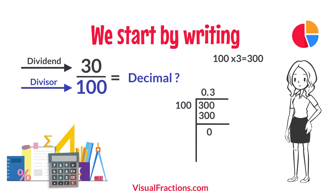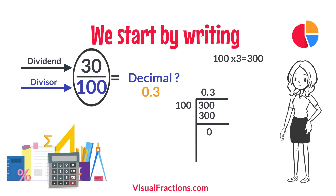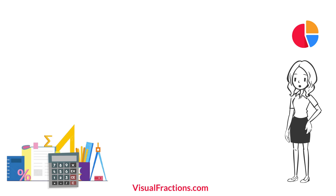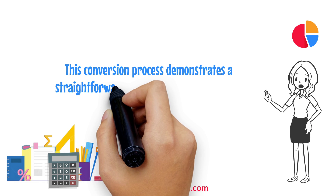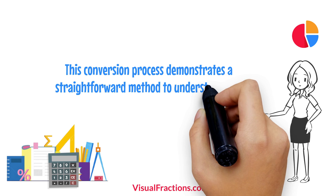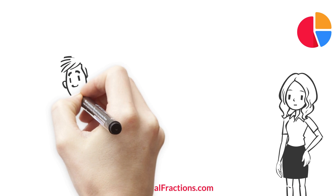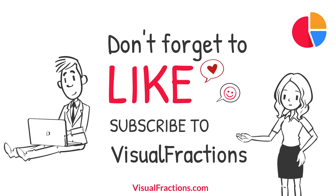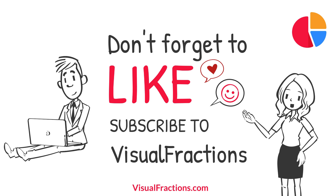There we have it. The fraction 31 hundredths converted to a decimal is 0.3. This conversion process demonstrates a straightforward method to understand and represent fractions in decimal form. If you found this tutorial helpful, make sure to hit the like button and don't forget to subscribe to Visual Fractions. Thanks for watching.